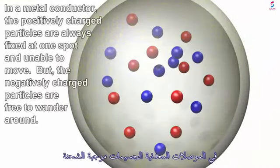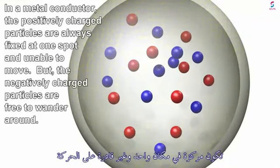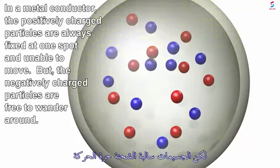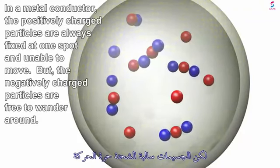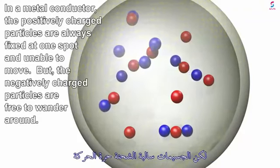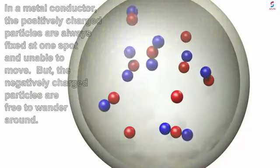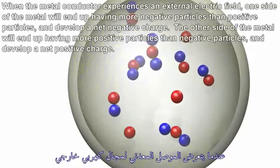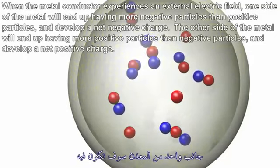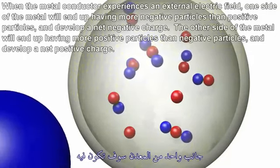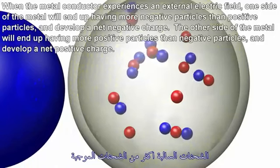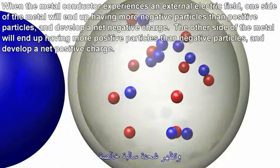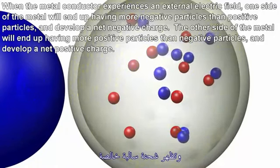In a metal conductor, the positively charged particles are always fixed at one spot and unable to move, but the negatively charged particles are free to wander around. When the metal conductor experiences an external electric field, one side of the metal will end up having more negative particles than positive particles and develop a net negative charge.